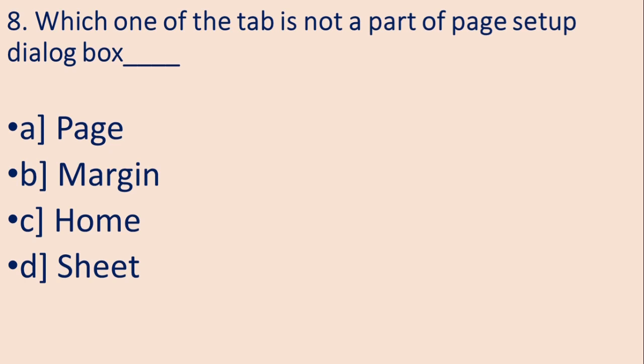Question number eight. Which one of the tab is not a part of page setup dialog box? The options are A. Page, B. Margin, C. Home, D. Sheet. And the correct answer is C. That is Home.